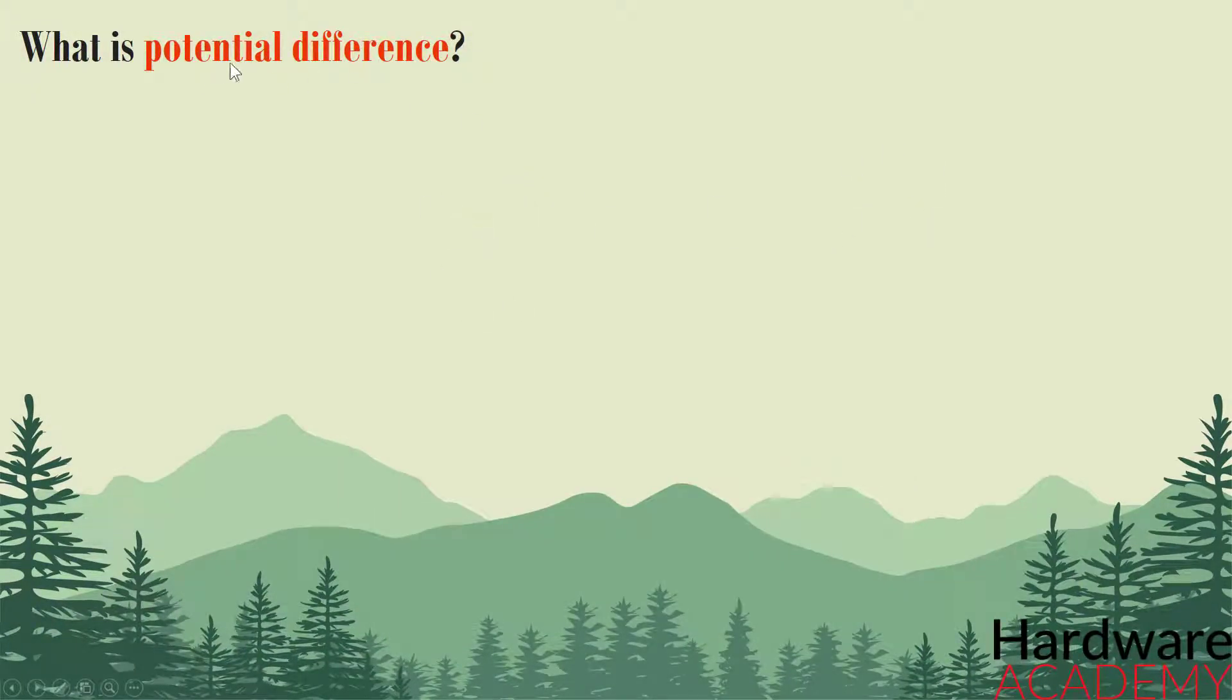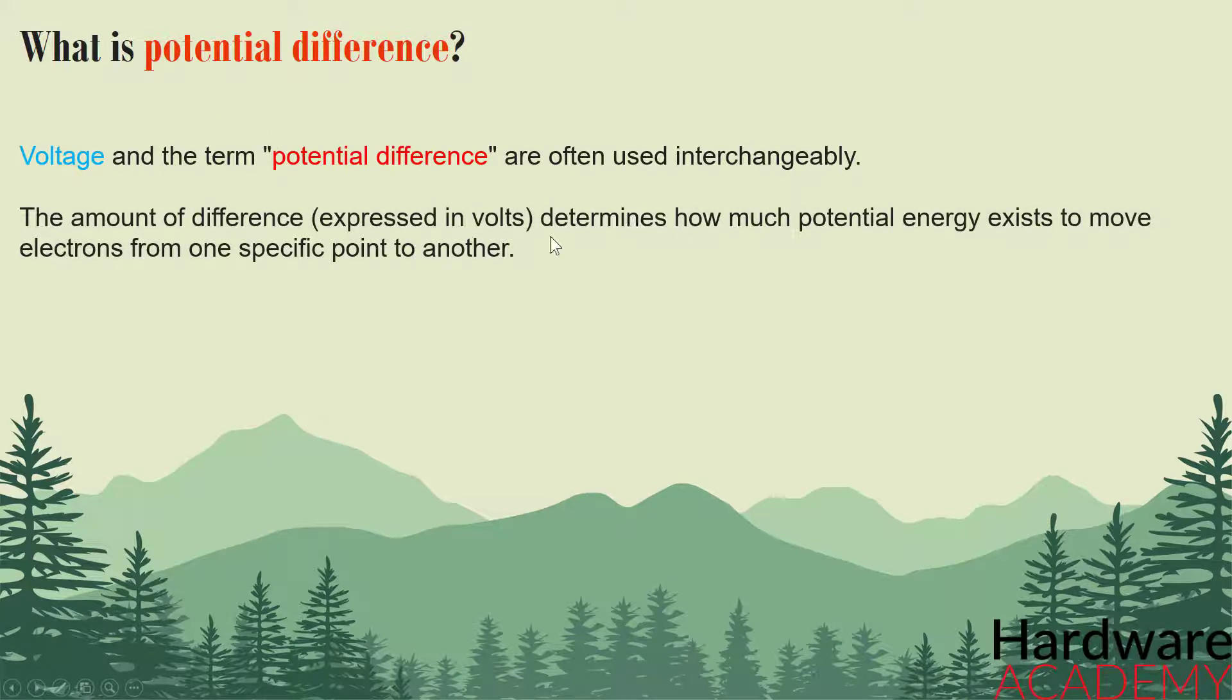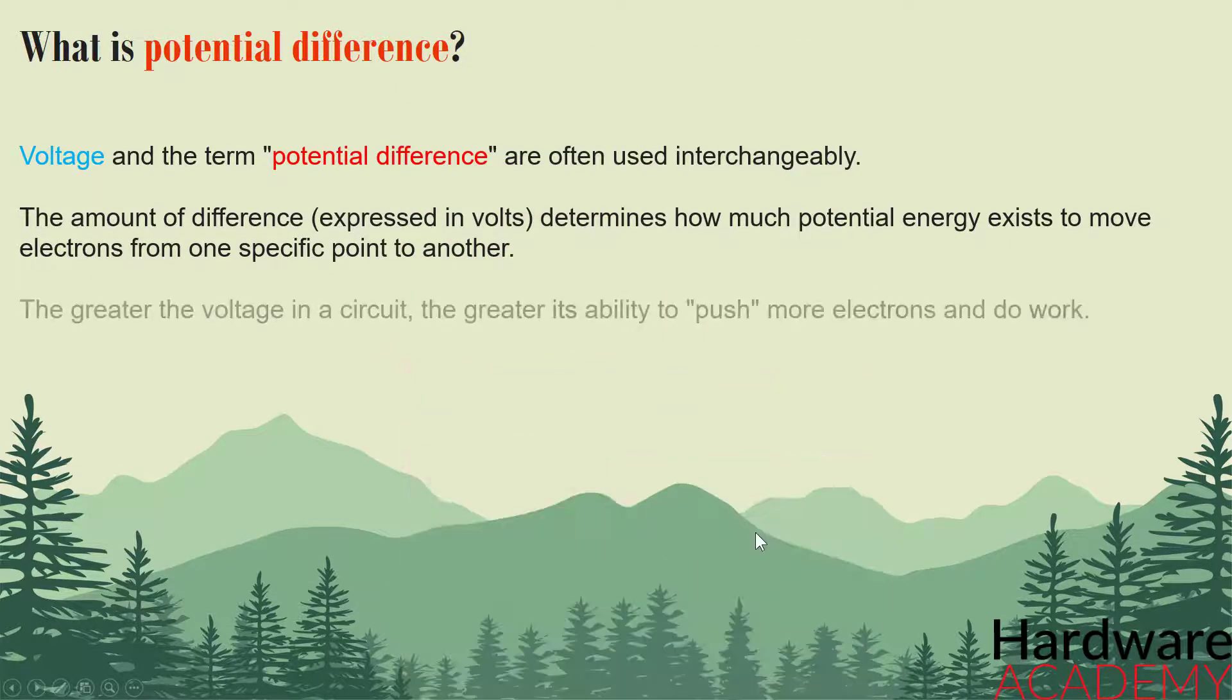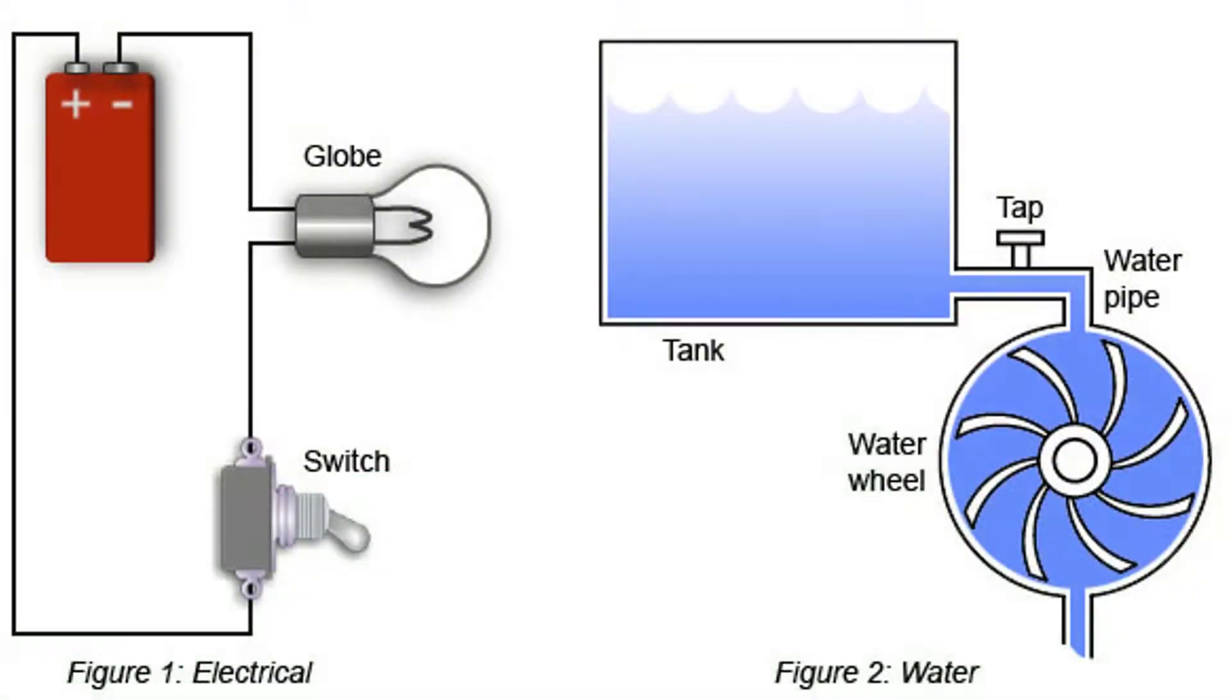You will hear almost all of the time that voltage is the potential difference between two points in a circuit. And that's 100% true, because the amount of difference, which is expressed in volts, determines how much potential energy exists to move electrons from one specific point to another. The quantity identifies how much work potentially can be done through the circuit. So a household AA alkaline battery for example offers 1.5 volts. Typical household electric outlets offer 120 volts. So the greater the voltage in a circuit, the greater its ability to push more electrons and do work. Voltage potential difference can be compared to water stored in a tank. The larger the tank, and the greater its height, and due to its potential velocity, the greater the water's capacity to create an impact when a valve is opened and water like electrons can flow.